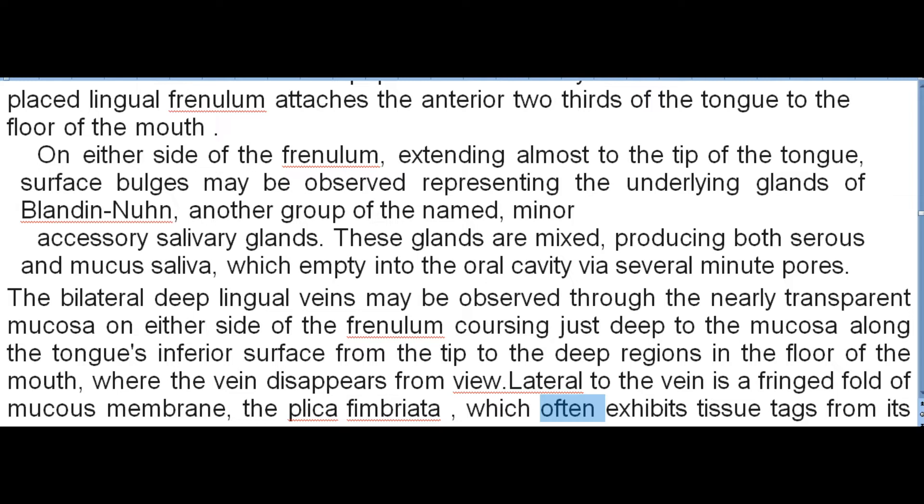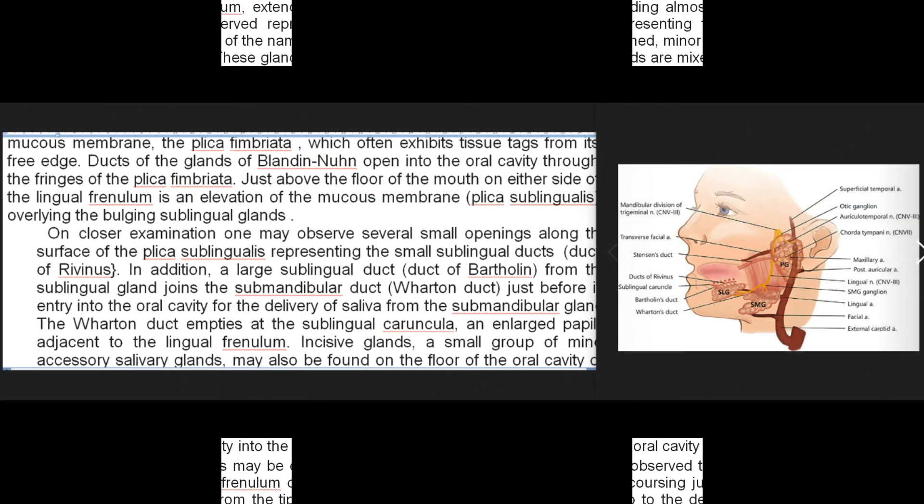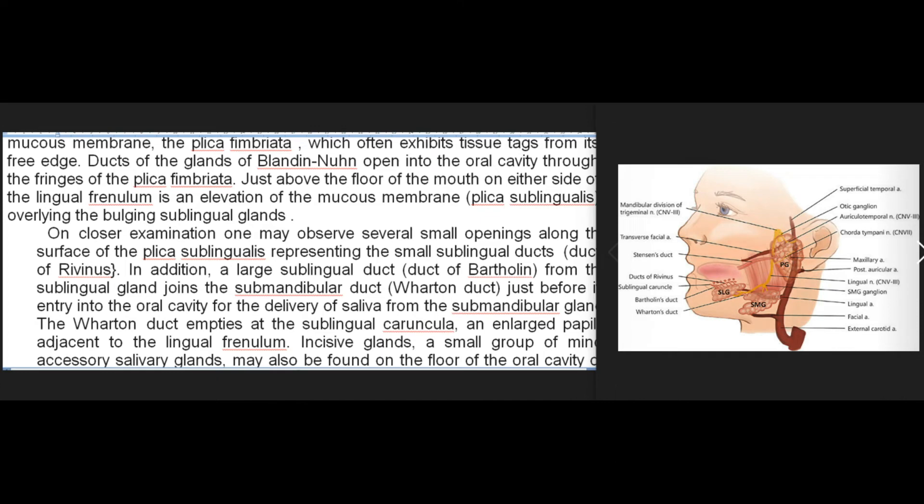The bilateral deep lingual veins may be observed through the nearly transparent mucosa on either side of the frenulum, coursing just deep to the mucosa along the tongue's inferior surface from the tip to the deep regions in the floor of the mouth. Lateral to the vein is a fringed fold of mucous membrane, the plica fimbriata, which often exhibits tissue tags from its free edge. Ducts of the glands of Blandin-Nuhn open into the oral cavity through the fringes of the plica fimbriata.